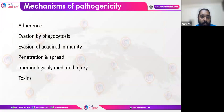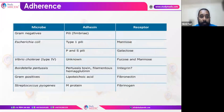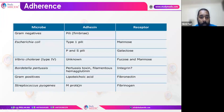Mechanisms of pathogenicity are carried out in various steps, including adherence, evasion of phagocytosis, evasion of acquired immunity, penetration and spread, immunologically mediated injury, and toxins. For adherence, bacteria use various adhesins — pili or fimbriae in gram-negatives, lipoteichoic acid in gram-positives, and M-protein especially in Streptococcus pyogenes.